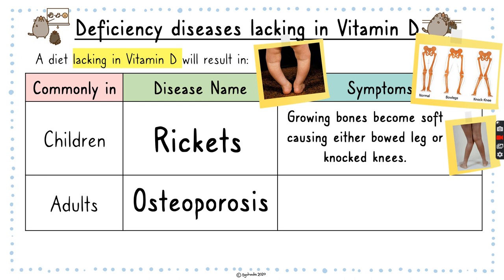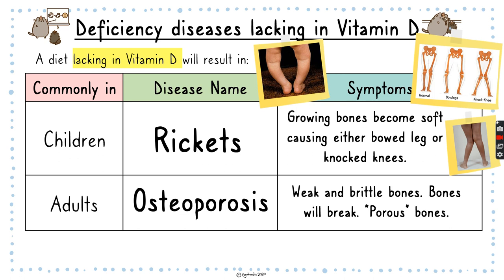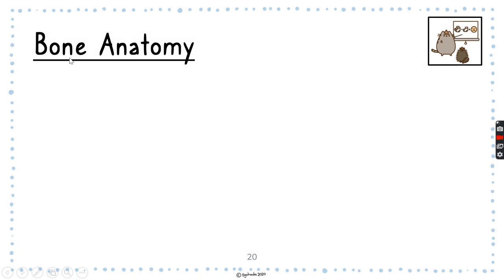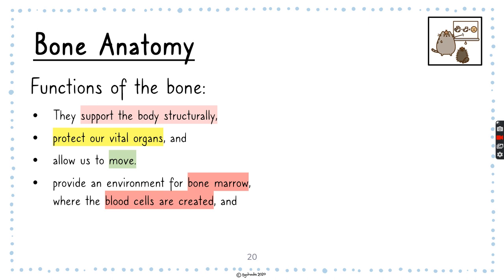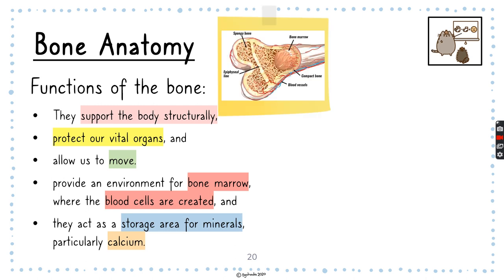For adults, if they don't have enough vitamin D, they can get osteoporosis, which is weak and brittle bones — the bones actually break because they are porous. Let's look at the bone anatomy. The bone is used to support the body structurally, giving you shape and helping you stand. It protects your vital organs — for example, the rib cage protects the lungs. It helps you to move, provides an environment for bone marrow where blood cells are created, and acts as storage for minerals like calcium.